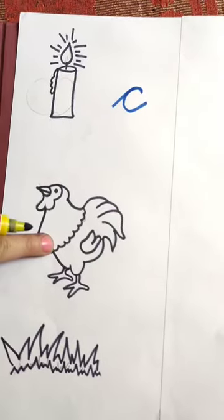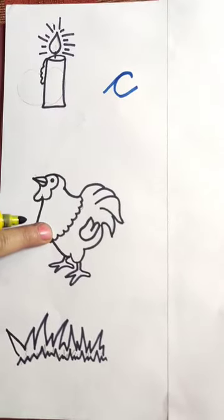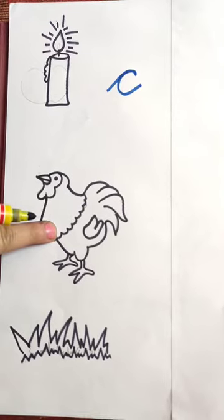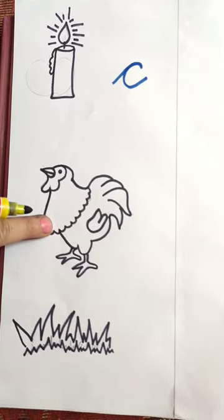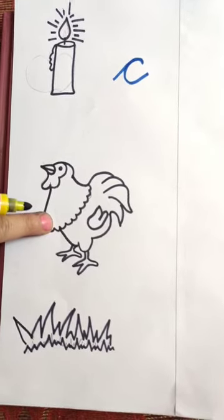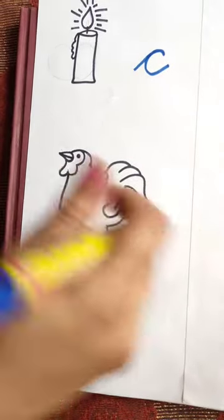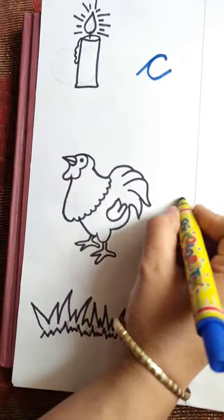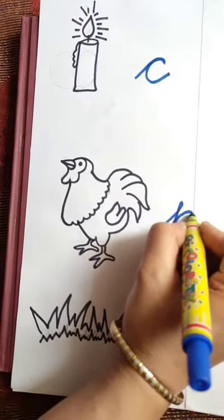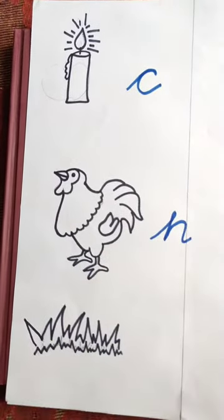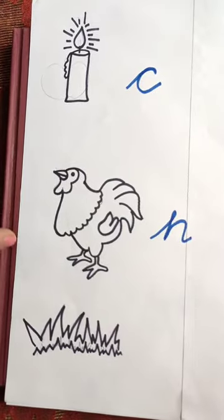This is the picture of hen. Hen. Hen. What is the beginning sound of hen? H. And H is the sound of H. How we will write H? Yes. We will write H only like this. H, H, Hen.